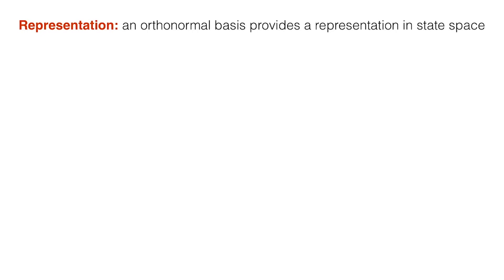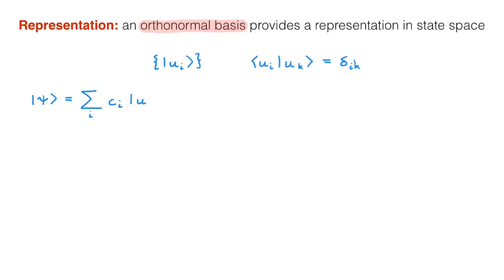When we perform calculations in quantum mechanics we invariably write states and operators in a specific representation. You can find all the details in the video on representations which I link in the description, but as a reminder a representation is a choice of orthonormal bases in state space in which we write kets, bras and operators. To see this in more detail, consider a collection of kets u that are mutually orthonormal. These kets u form a basis if we can write any ket psi in our state space in a unique expansion in terms of these u, and the c coefficients are given by the bracket between u and psi. These c coefficients are called the representation of psi in the u basis.